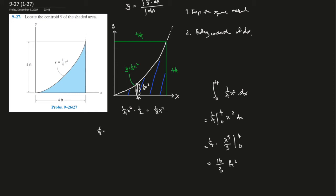And we can plug that into this over here. So let's see, 1/8 x squared times 1/4 x squared, and we integrate this from 0 to 4, dx. And that should give us 1/32 x to the 4th.